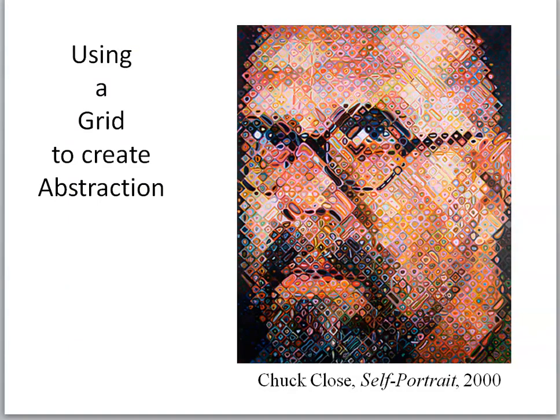Chuck Close's self-portrait from 2000 — he works with a grid that breaks up his face into tiny squares, then adds different colors, and together those individual cells blend like tiny pixels in a photo to make a more recognizable image. The reason he does this is he has a disorder called face blindness that makes it impossible for him to remember faces. He'll recognize someone by their hair or clothes or voice, but he can't look at your face and know who you are — not even his own face. He'll look in the mirror and not know who that person is, even though it's him. It is a medical condition, and he uses his art to help overcome it.